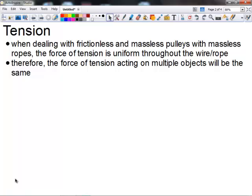the force of tension is uniform throughout the wire or rope. When you start dealing with pulleys that have friction and mass and they start to rotate, you're then dealing with the idea of torque. But we're not looking at that yet. So we're going to look at our tension being uniform throughout the entire rope. Therefore, the force of tension that acts on multiple objects will be the same. It's something very important for us in terms of solving these kind of problems.